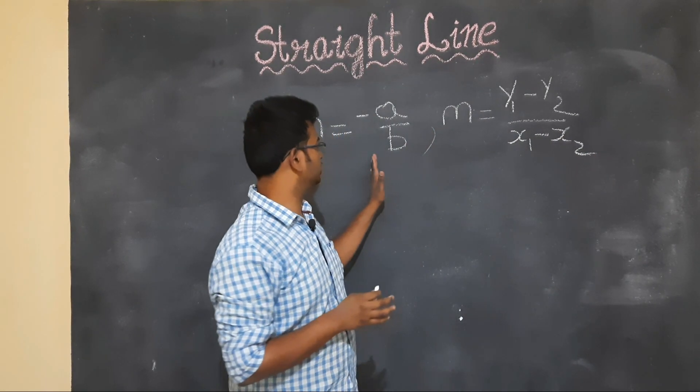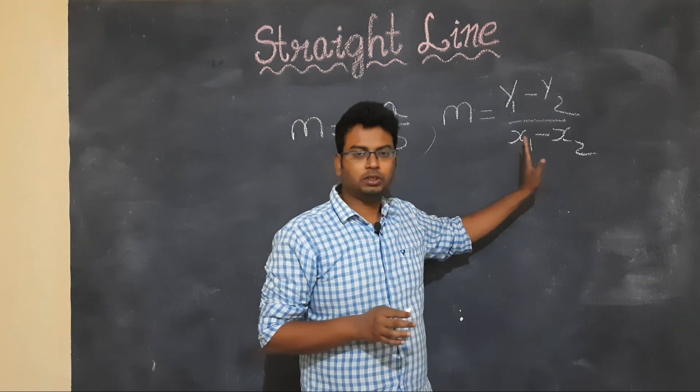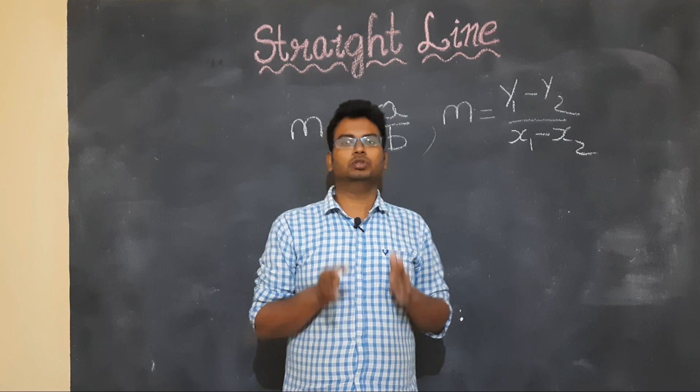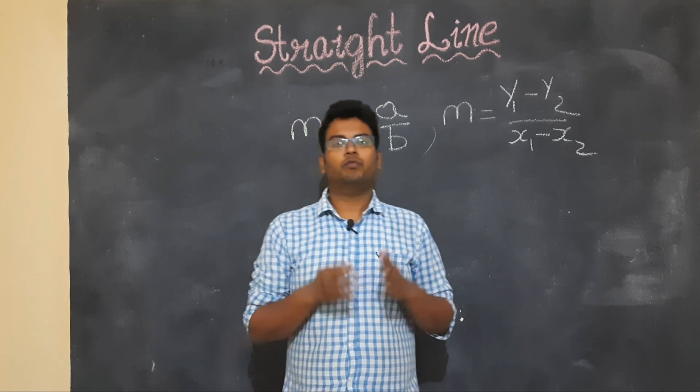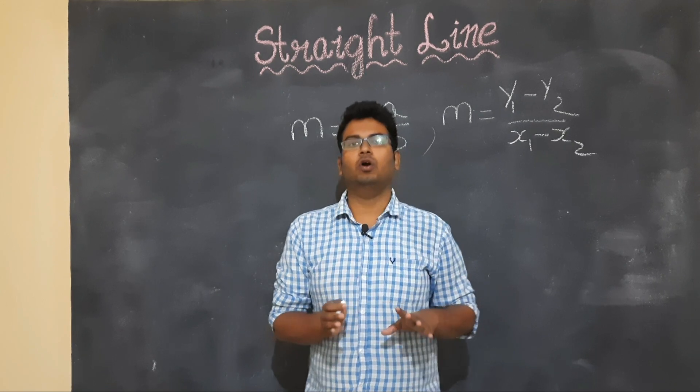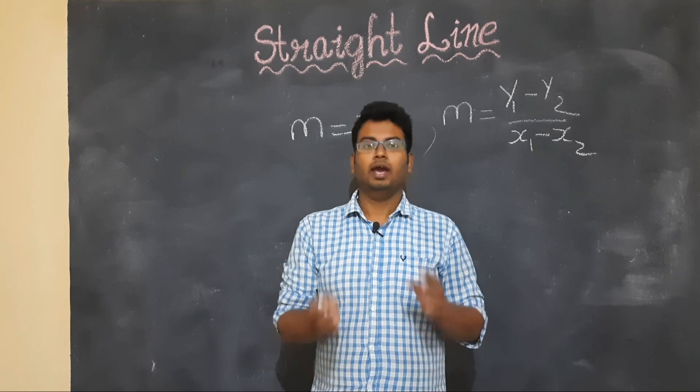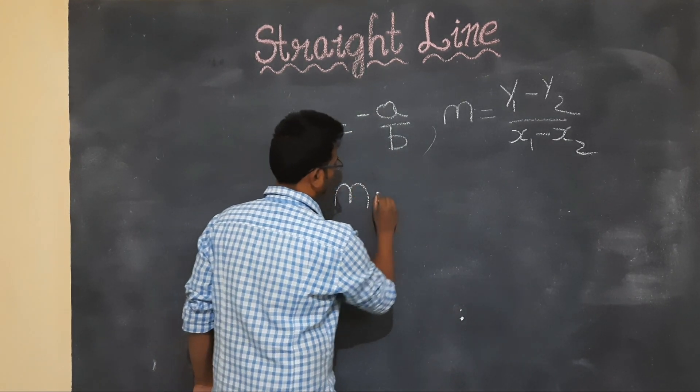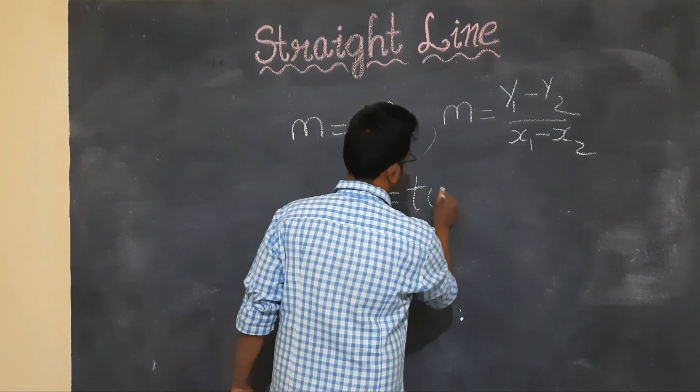So when equation is given, we use this formula. When two points are given, we use this formula. When an angle is given, we find the slope using m is equal to tan theta.